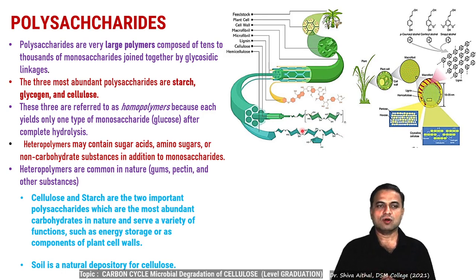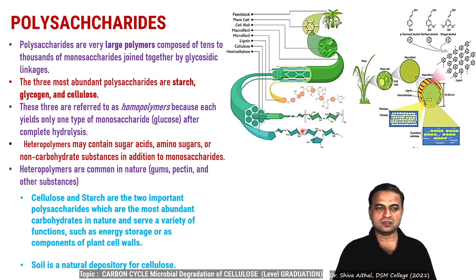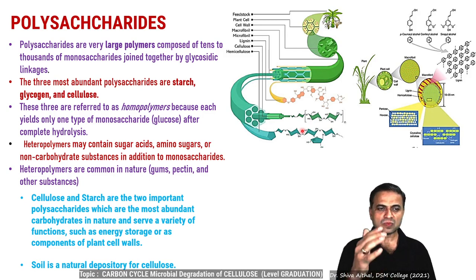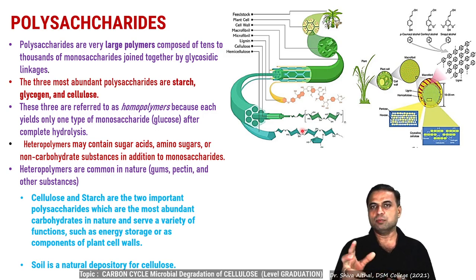Heteropolymers or heteropolysaccharides contain sugars, amino acids, or some non-carbohydrate moieties in addition to monosaccharides. Heteropolymers are very common in gums, pectins, and other plant substances. Cellulose and starch are the two most important polysaccharides we will study; in nature they serve a variety of functions, the primary being energy storage and structural roles in the plant cell walls.